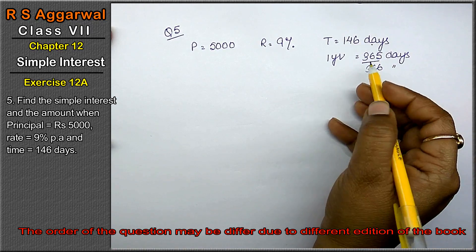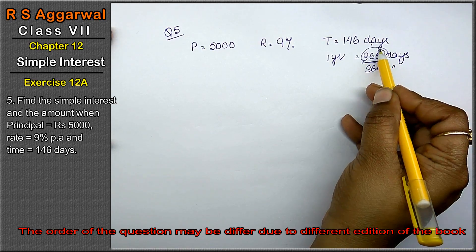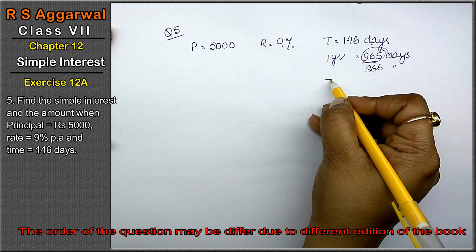Nothing else is given, so we will take 365 days. Time will be 146 divided by 365 days in years.